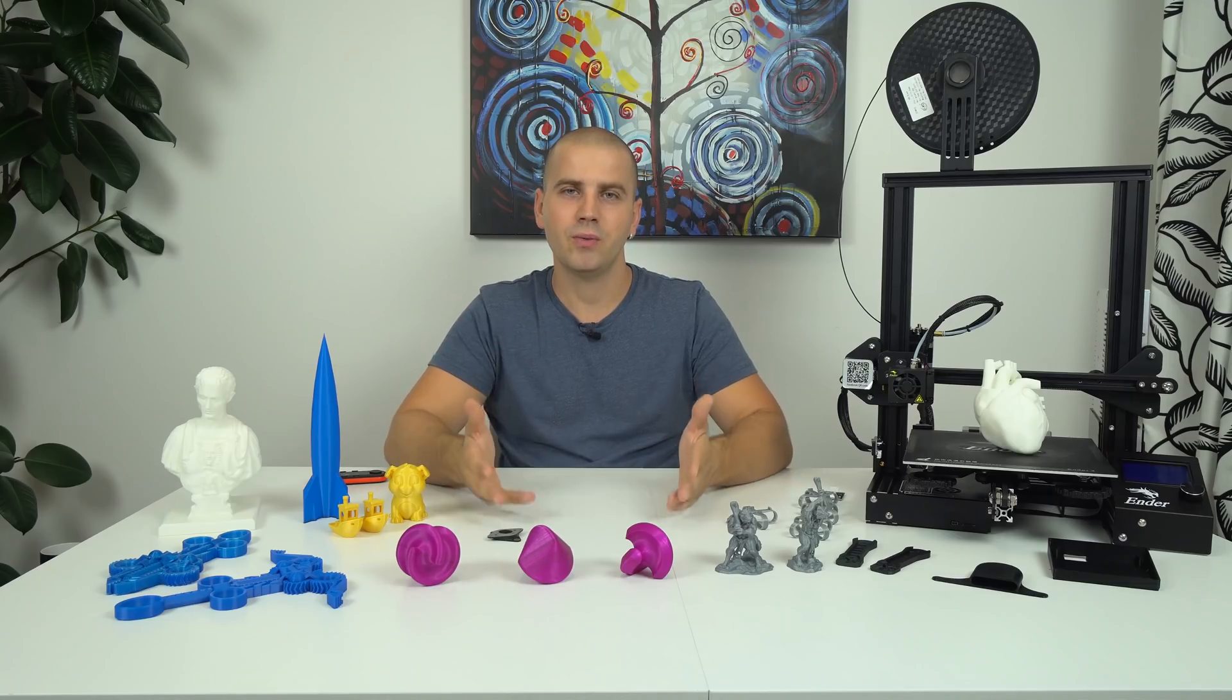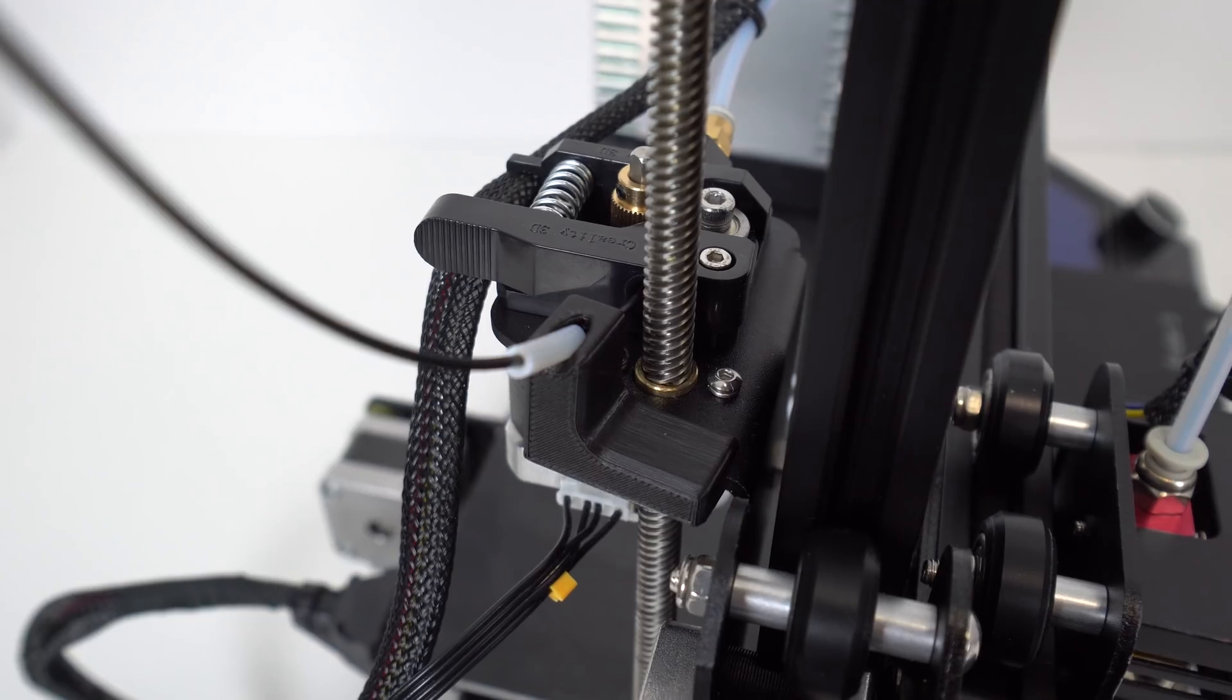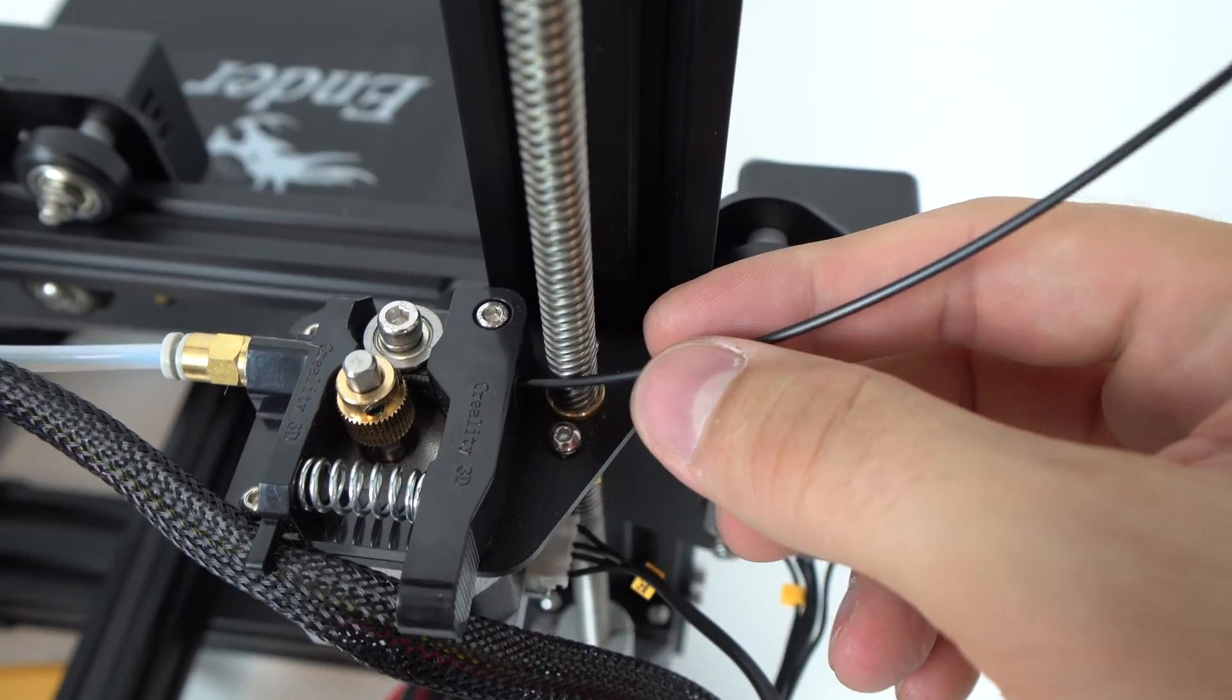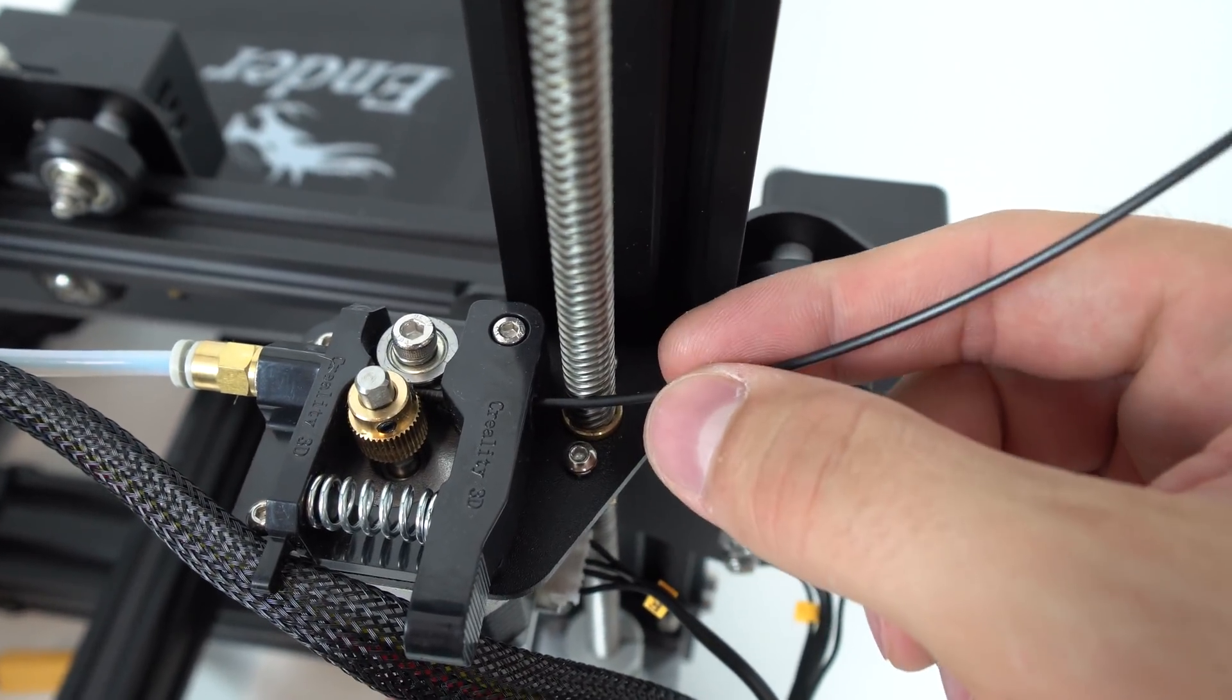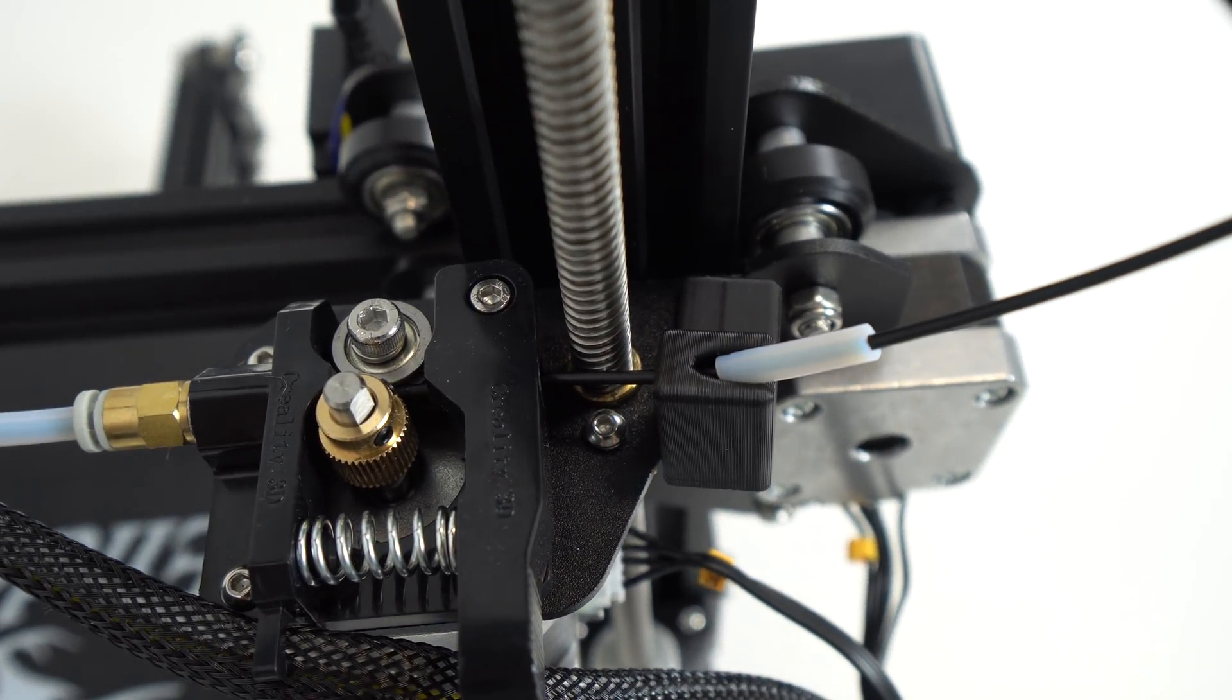And now I want to point out a few small but very important upgrades that should be installed on every Ender 3 machine in my opinion. First this filament guide that will make sure that the filament doesn't rub on the Z rod which can be oiled or greased and that also lowers the angle of the filament going to the extruder.